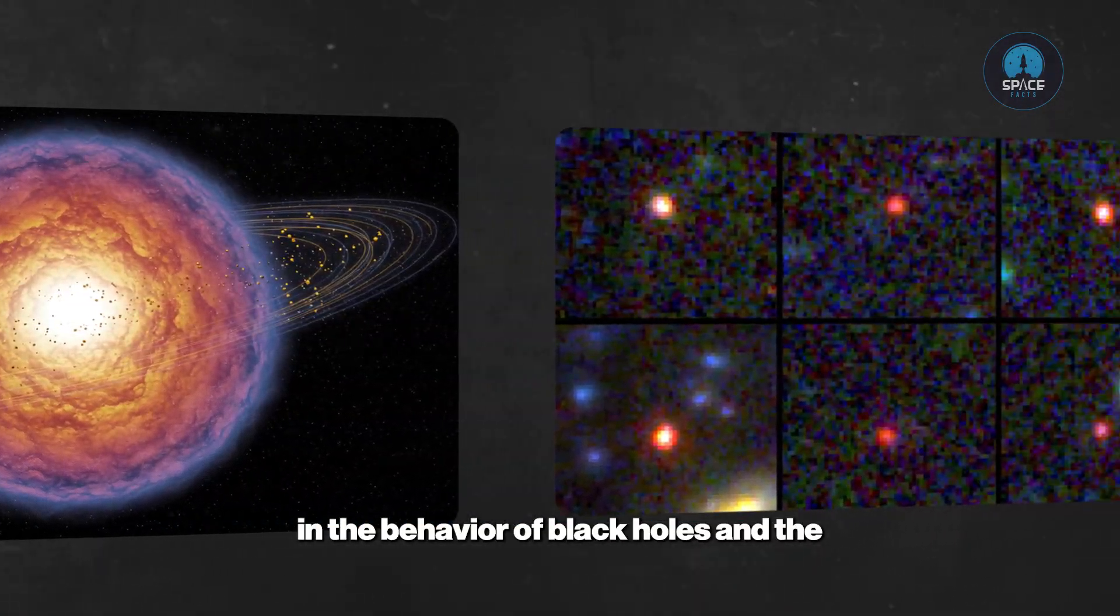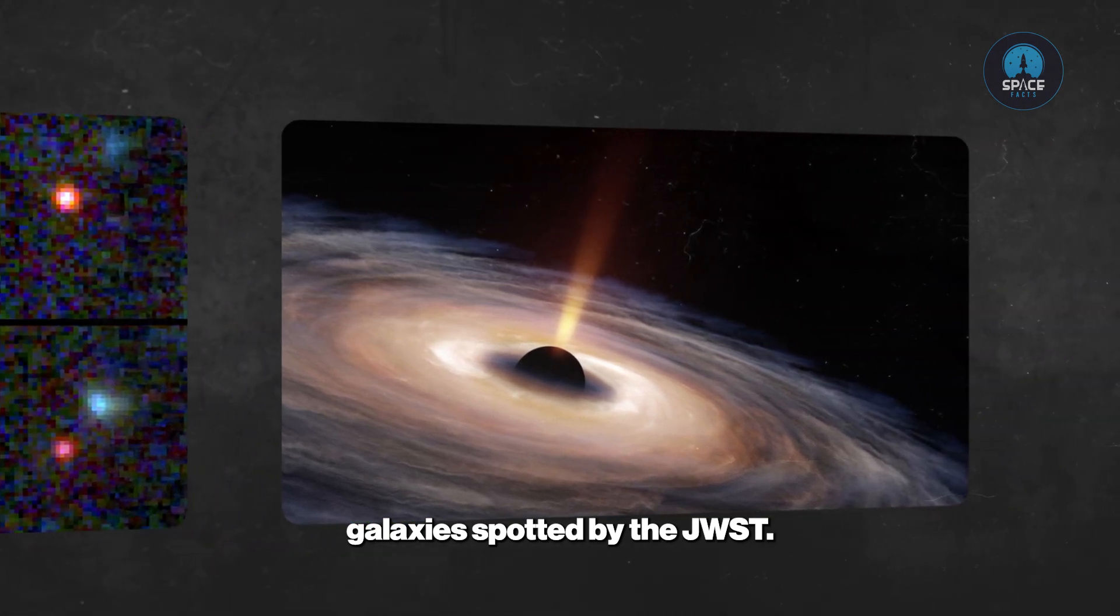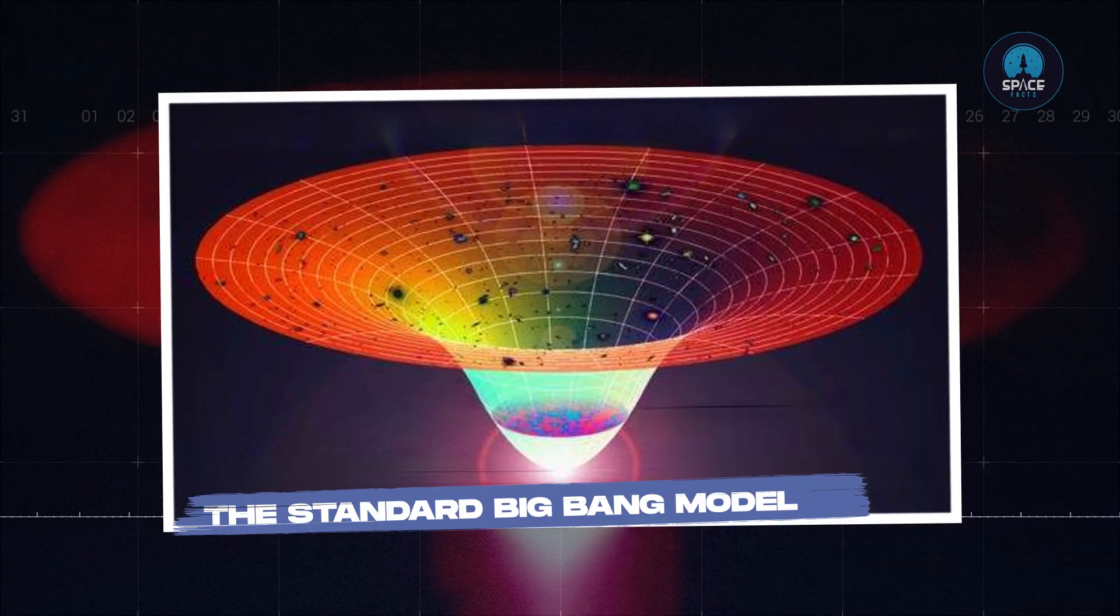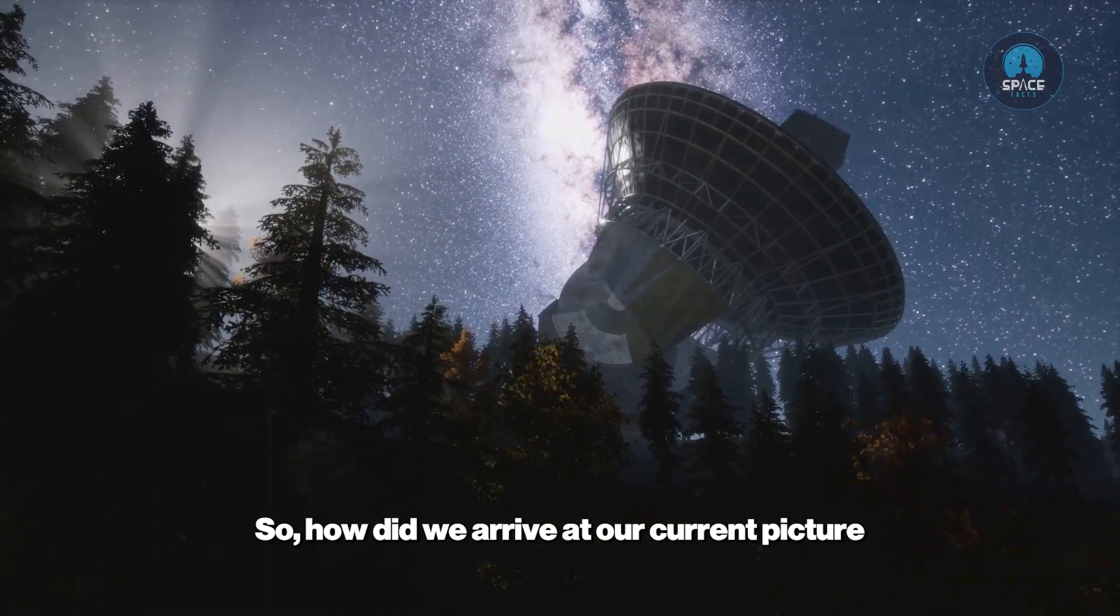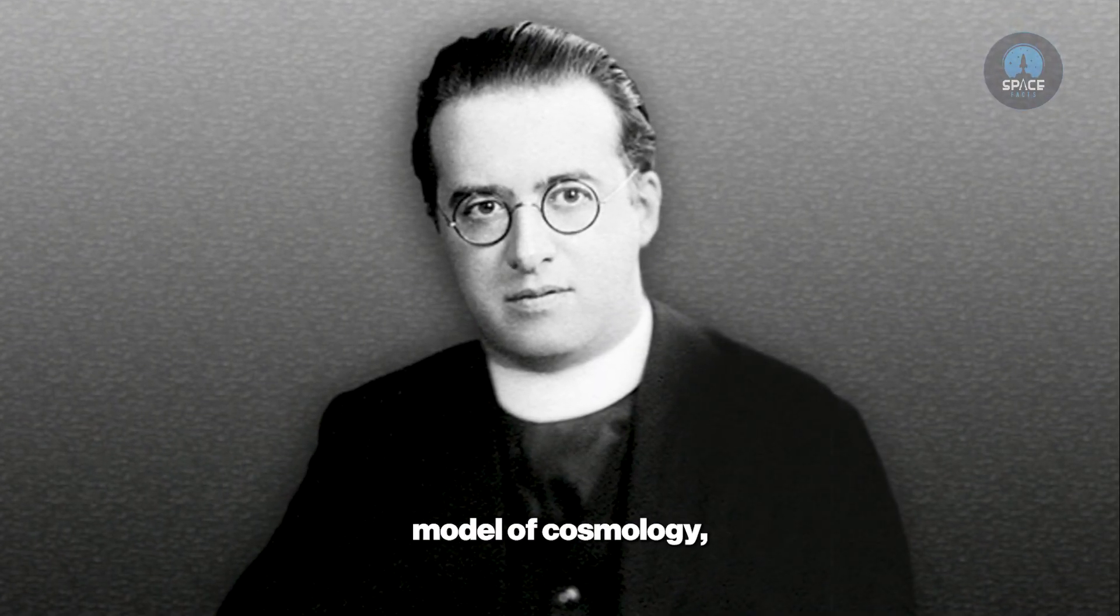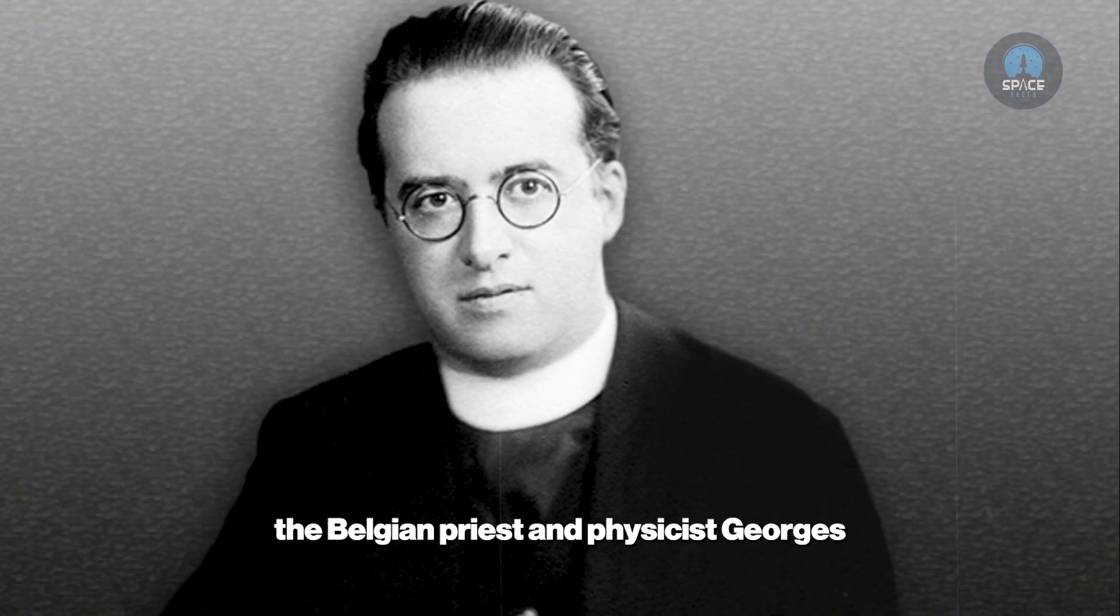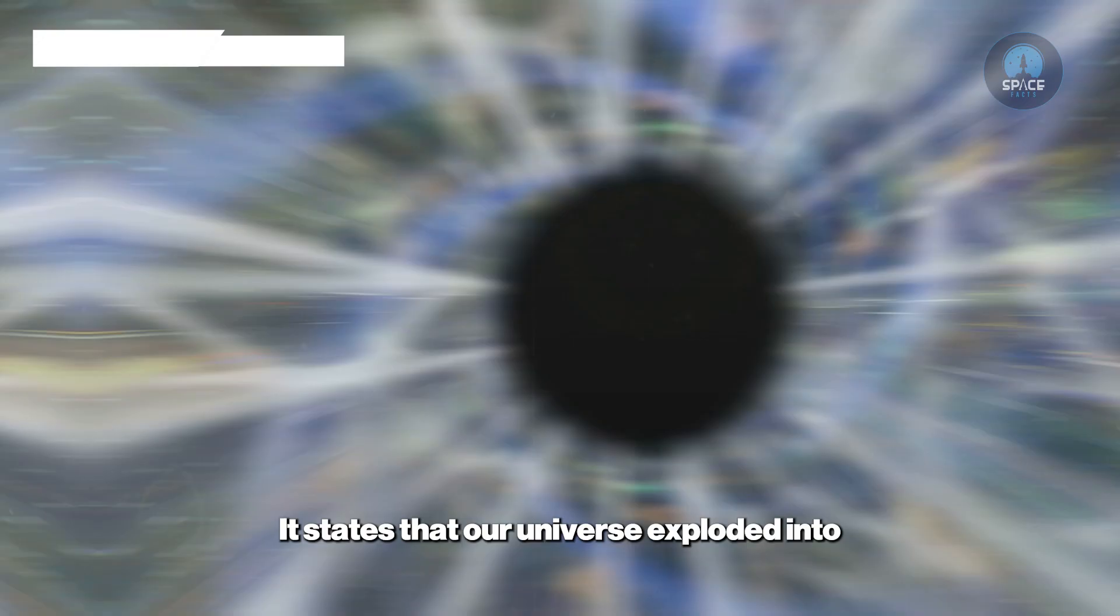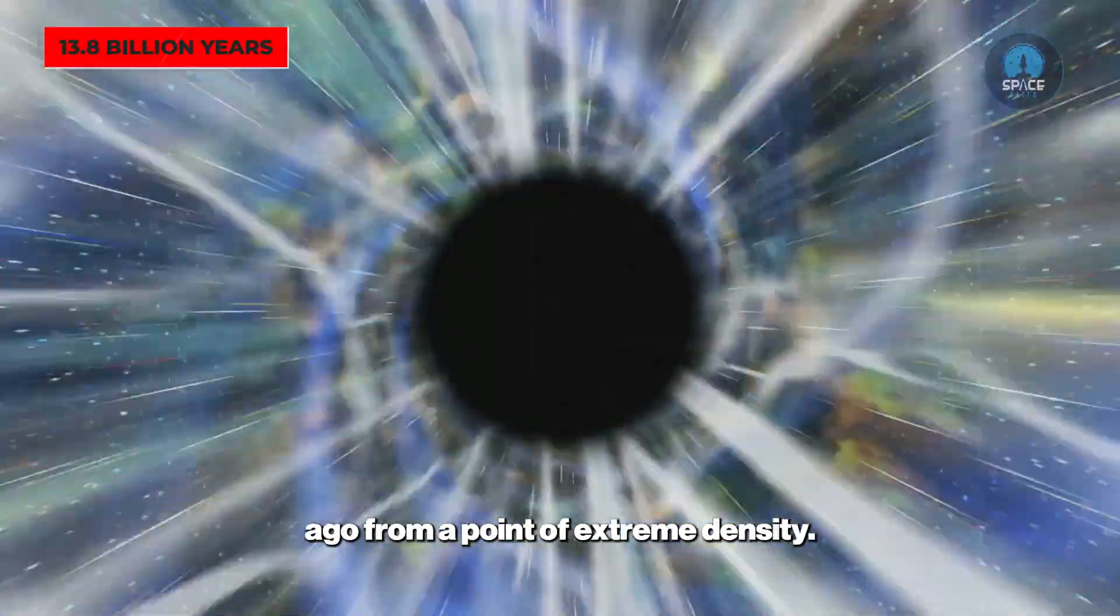The clues might be hidden in plain sight in the behavior of black holes and the baffling arrangement of the most distant galaxies spotted by the JWST. Let's explore this mind-bending possibility together. The standard Big Bang model: How did we arrive at our current picture of the universe? The story most of us know is the standard model of cosmology, first mathematically conceptualized by the Belgian priest and physicist Georges Lemaître in 1927.